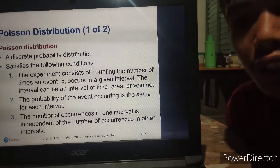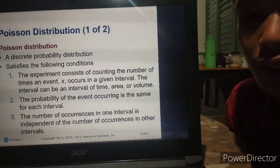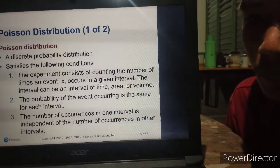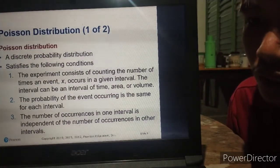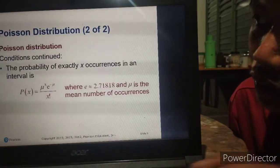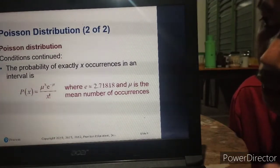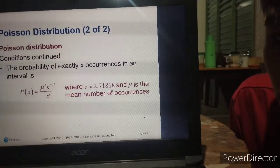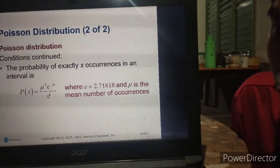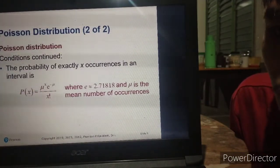Third, the number of occurrences in one interval is independent of the number of occurrences in other intervals, so this means that occurrences in one interval do not rely on the other. Fourth, the probability of exactly X occurrences in an interval is P(X) equals M raised to X times E raised to negative M over X factorial.